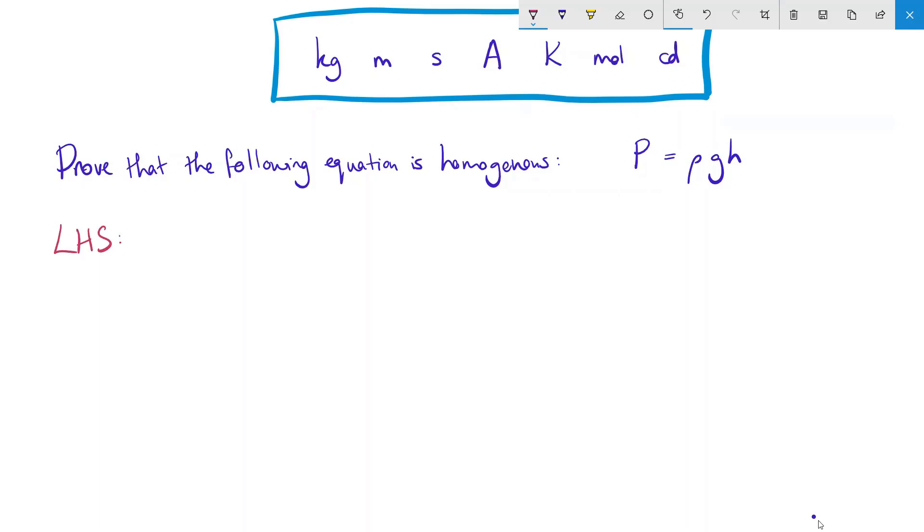Let's take the left-hand side first. This P is pressure, which is measured in pascals. Pascals are not on the list, so we need another formula for pressure. Area is metres squared, but force is newtons, so another formula needed for force.